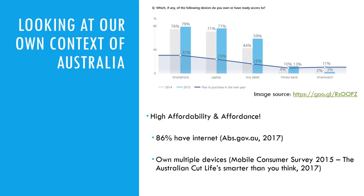Most Australians now have internet at home and own multiple devices, but smartphones are the dominant device. Human biology requires devices of higher affordance, hence they are less affordable, but our developed world context of Australia allows for this.